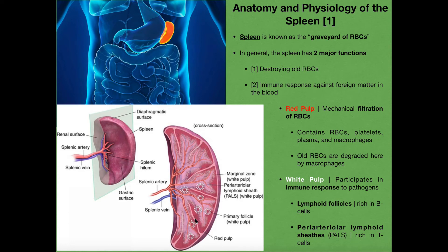To accomplish these two different functions, the spleen has different regions: red pulp and white pulp. The red pulp is involved in the mechanical filtration of red blood cells. Red pulp contains red blood cells, platelets, plasma, and macrophages. Blood that enters the red pulp is filtered for damaged or old red blood cells and platelets, and when those are detected, they are degraded by macrophages. In the cross-section of the spleen, the red pulp is the outer region — more superficial — and that's where red blood cells are destroyed.